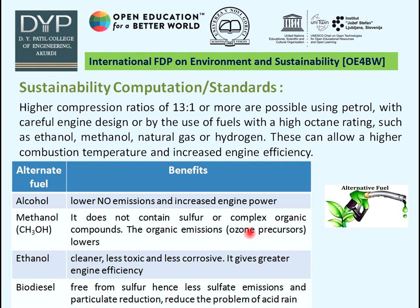Higher compression ratios of 13:1 or more are possible using petrol with careful engine design or by using fuel with a high octane rating such as ethanol, methane, natural gas, or hydrogen. Alternate fuels include alcohol, which produces low emissions. For methanol, there is no sulfur content, so organic emissions will be lower.